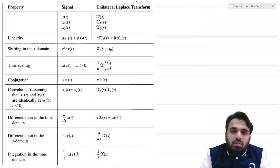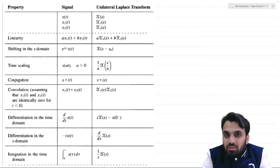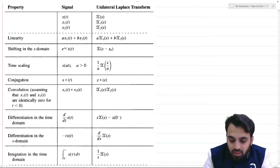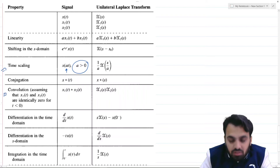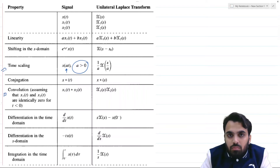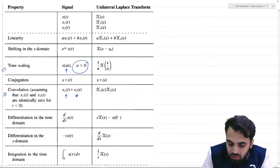The properties of the unilateral Laplace transform are very similar to those of the bilateral Laplace transform. However, the unilateral Laplace transform is more limiting and has additional assumptions. For example, the time scaling property is only valid for a greater than zero, whereas for the bilateral transform this condition was not required. Similarly, for convolution in the time domain — which gives multiplication in the s-domain — x₁ and x₂ must be causal.